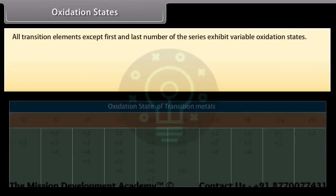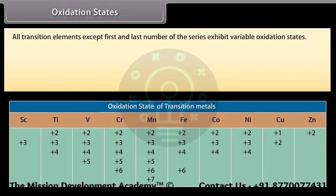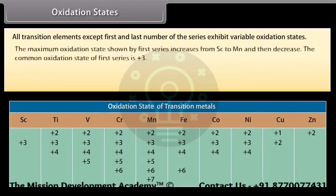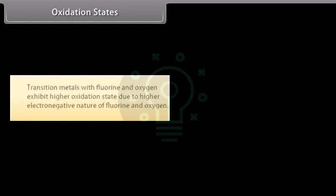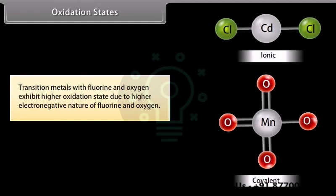All transition elements, except the first and last members of the series, exhibit variable oxidation states. The maximum oxidation state shown by the first series increases from scandium to manganese and then decreases. The common oxidation state of the first series is +3. Compounds in lower states (+2 and +3) are mostly ionic and those in higher oxidation states are covalent. For example, ZnCl₂ and CdCl₂ are ionic, while Cr₂O₇²⁻ and MnO₄⁻ are covalent. Transition metals with fluorine and oxygen exhibit higher oxidation states due to the higher electronegativity of fluorine and oxygen.